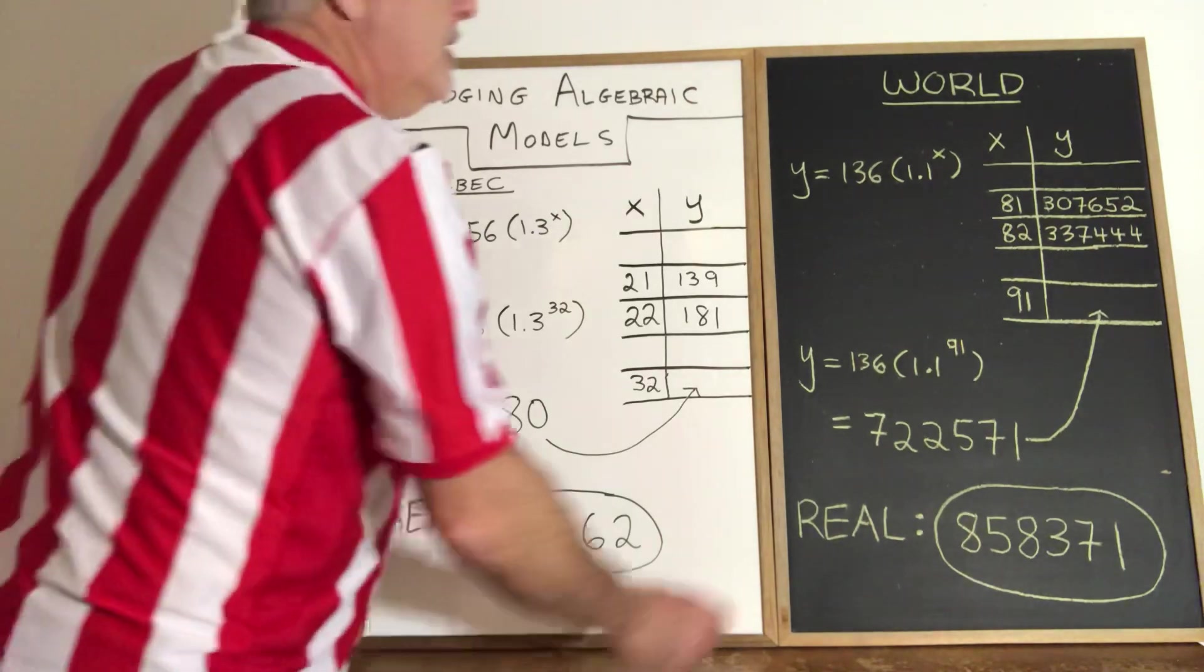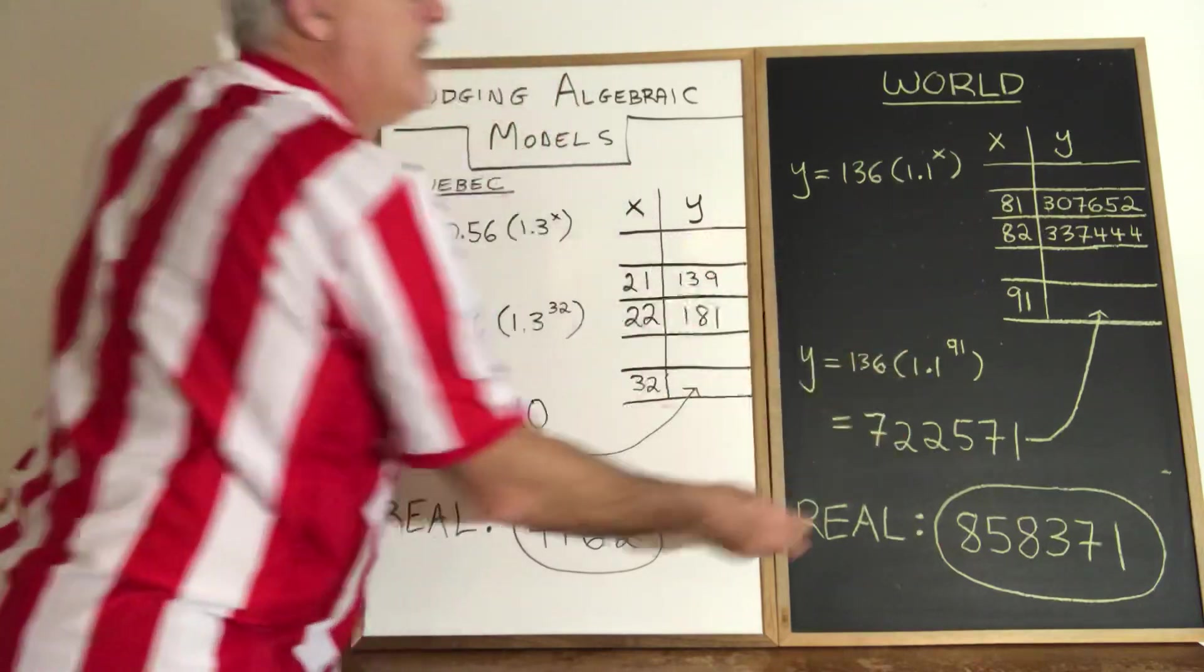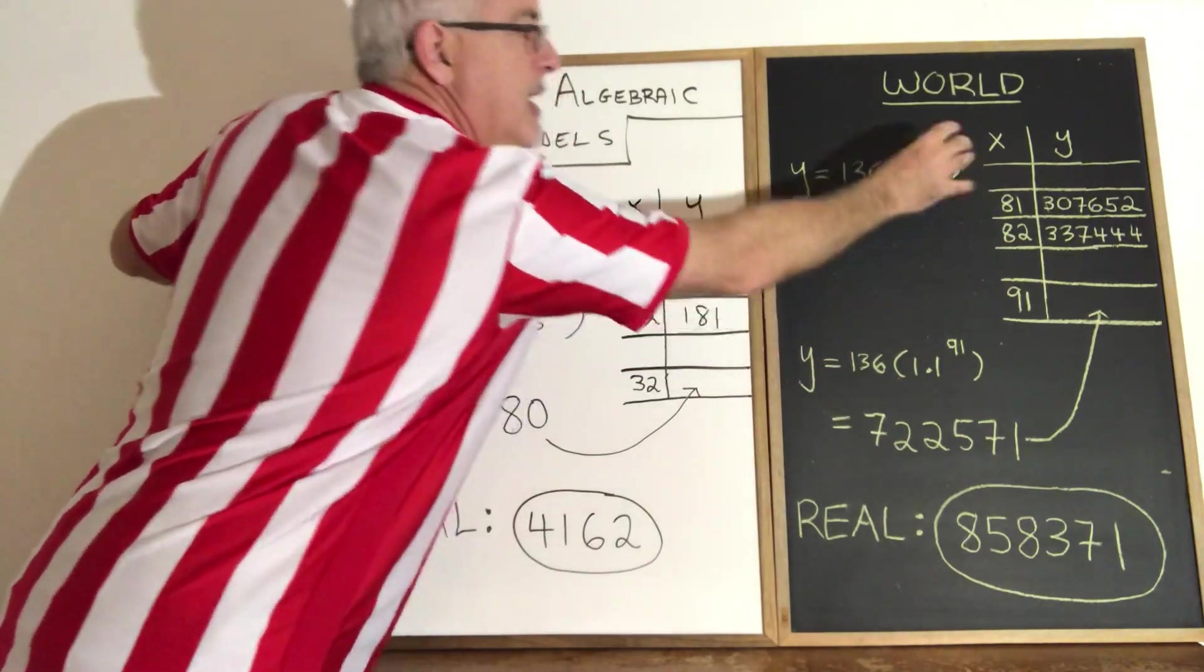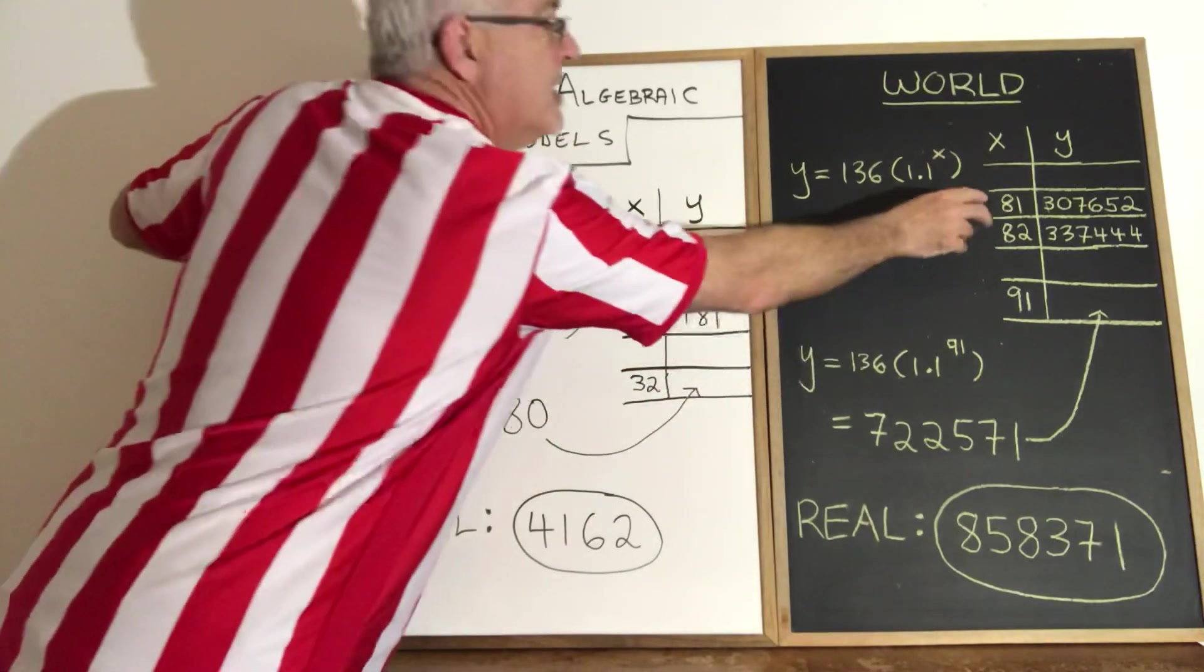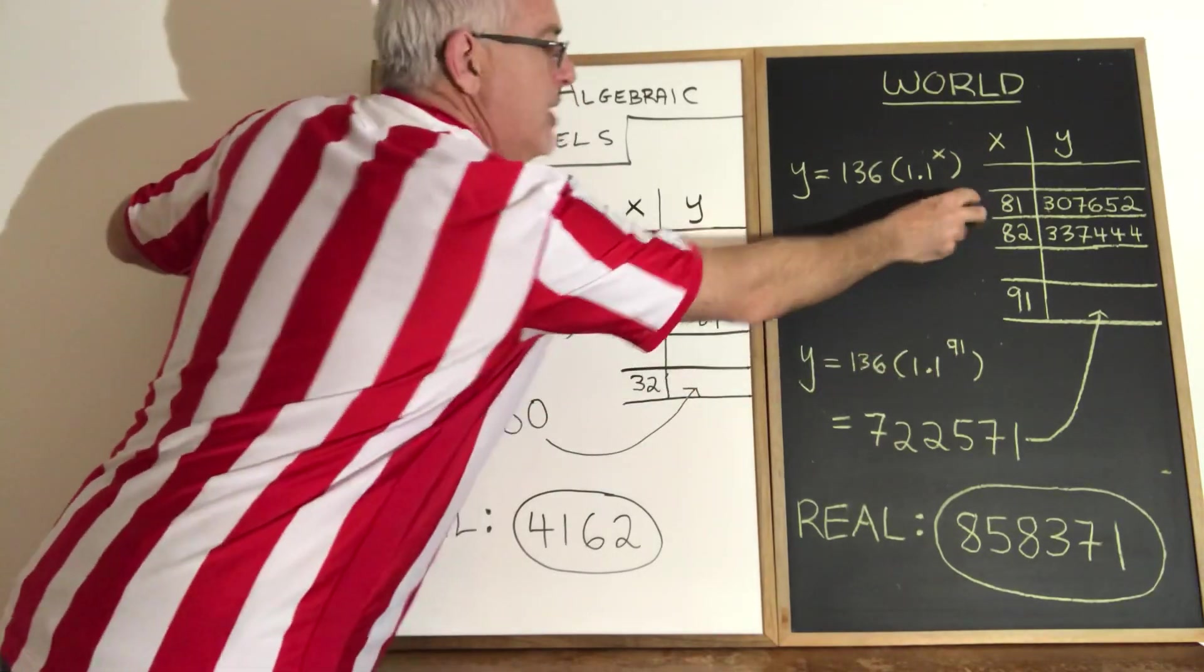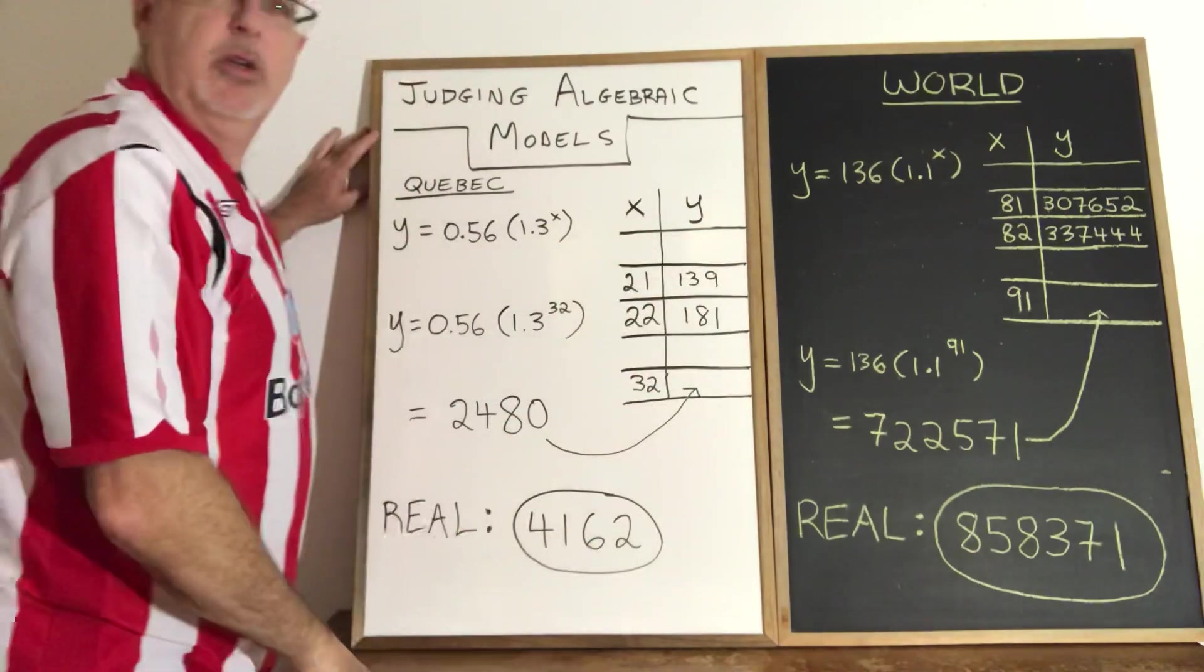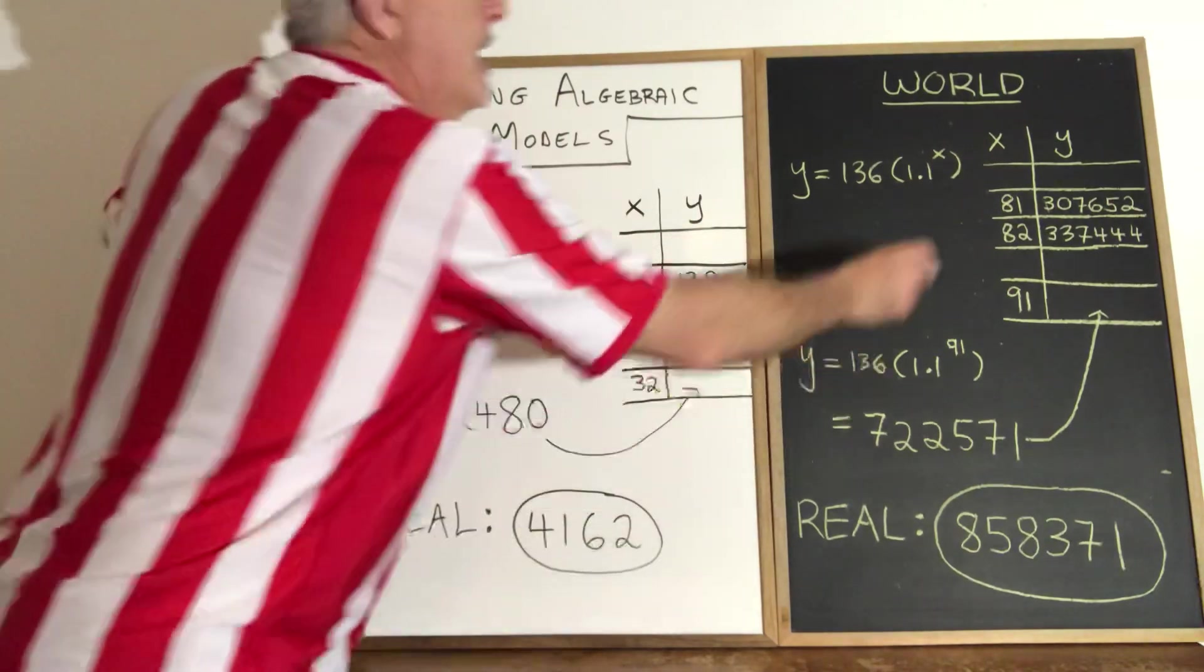In the world we did the same thing, but the days in the x part of the table of values started at a different time. So the two days that we used, the same two days which were March 21st and March 22nd, counted as day 81 and day 82 for the model that we made for the world.